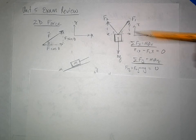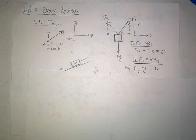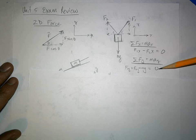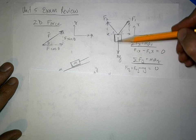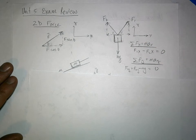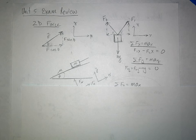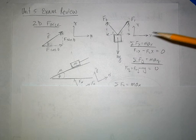From the free body diagram: F1x minus F2x equals zero, giving a relationship between F1 and F2 in the x direction. In the y direction, acceleration is also zero: F1y plus F2y minus mg equals zero. You use these two equations to solve the problem — it becomes algebra, maybe requiring a substitution. That's the basic idea for a hanging sign problem.